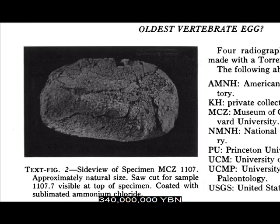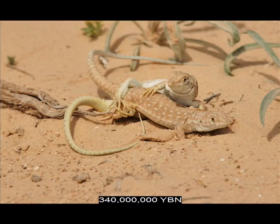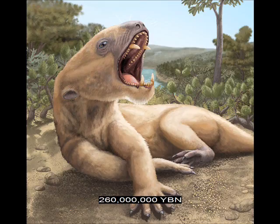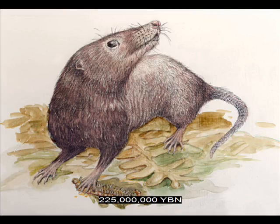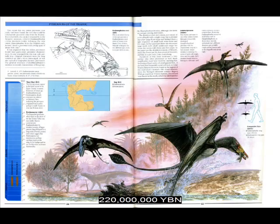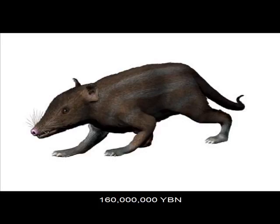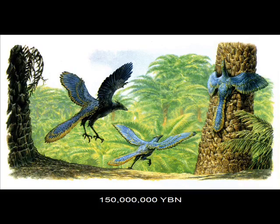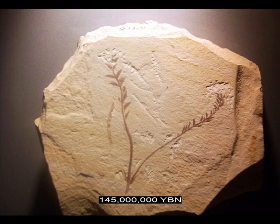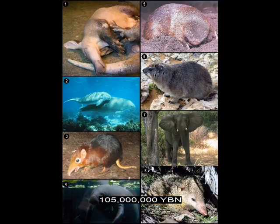First seed. Hard shell egg. The amniota — ancestor of reptiles, mammals, and birds. Start of vertebrate internal fertilization. Reptiles. Warm-blooded hair-growing animal. Dinosaurs. Mammals. First nipple and breast. First flying vertebrate: pterosaur. Marsupials. Placental mammals. Birds evolve. First feather. First flowering plant. Fruits, nuts, vegetables.